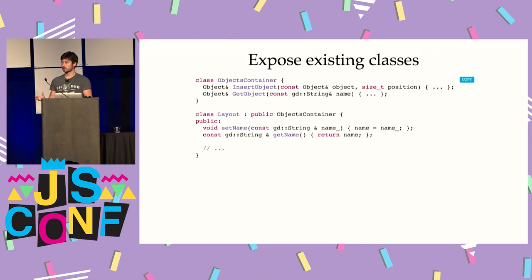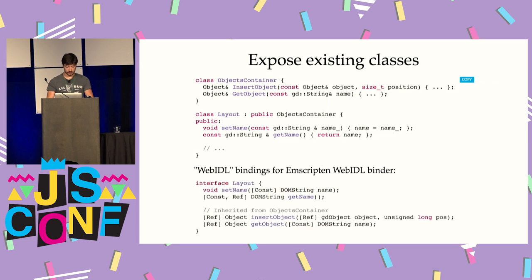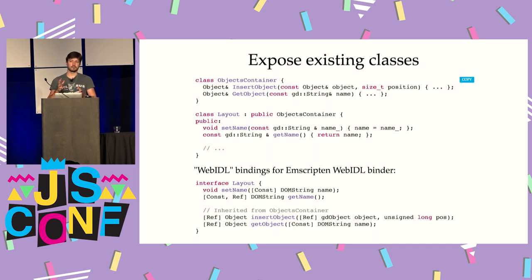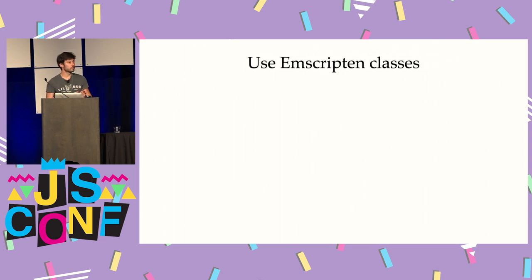For example, we have a class called ObjectsContainer — think of it as the list of objects you've seen. We can have objects and get objects inside it. Then we have a Layout — a bit like a level in the game — which inherits from ObjectsContainer, so it has a list of objects, plus additional methods like setName and getName to change the name of the level. To expose these, we write bindings. In my case I've been using WebIDL — you write something that looks like the interface of your C++ class for all classes in your code base, and this allows Emscripten to generate glue code that bridges JavaScript and the WebAssembly module.